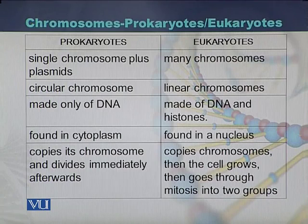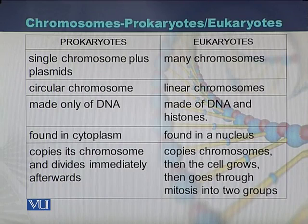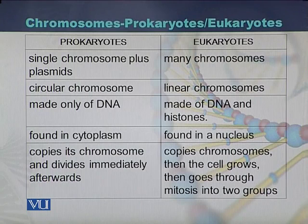Here is the comparison between chromosomes present in prokaryotic and eukaryotic cells. In prokaryotic cells, there is a single chromosome as well as a plasmid, while in eukaryotic cells there are many chromosomes. Prokaryotic chromosomes are circular in shape, while eukaryotic chromosomes are linear. Prokaryotic chromosomes are made of only DNA, while eukaryotic chromosomes are made of DNA and histones.